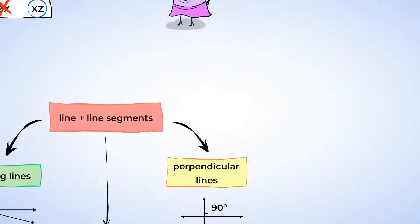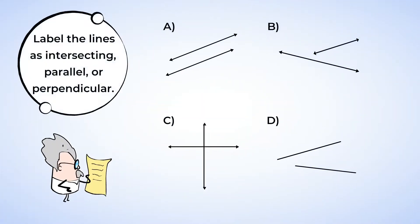Let's practice identifying special lines. Label the lines as intersecting, parallel, or perpendicular. Alright, here we go! Part A shows two lines, and the lines look like they will never intersect. This makes them parallel lines.